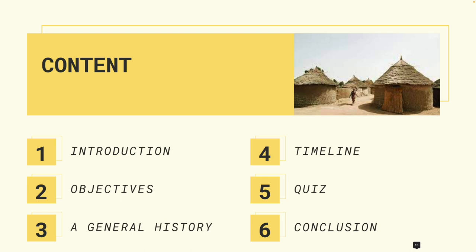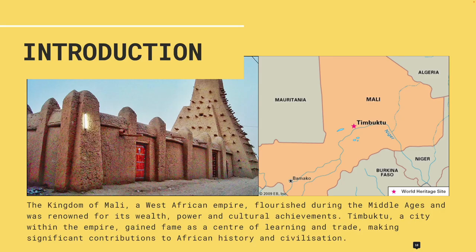Introduction: the Kingdom of Mali was a West African empire that flourished during the Middle Ages and was renowned for its wealth, power, and cultural achievements. Timbuktu, a city within the empire, gained fame as a center of learning and trade, making significant contributions to African history and civilization.